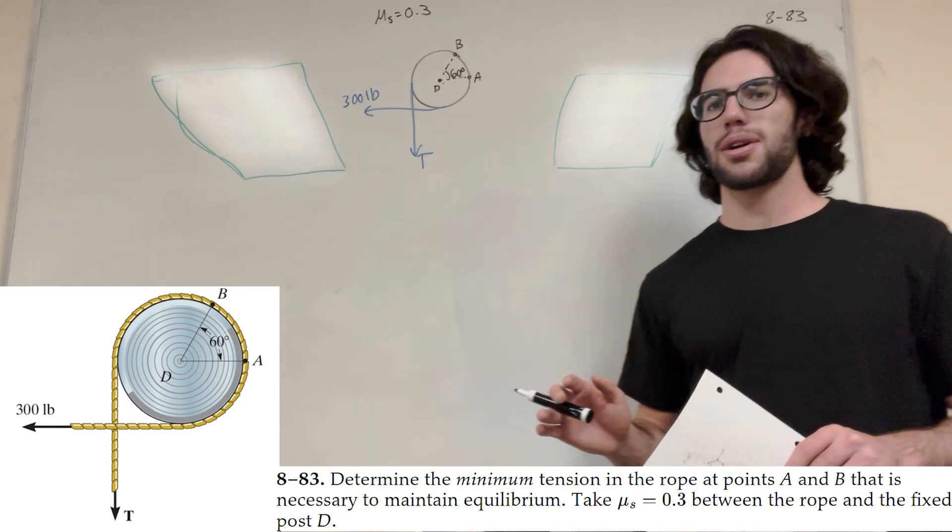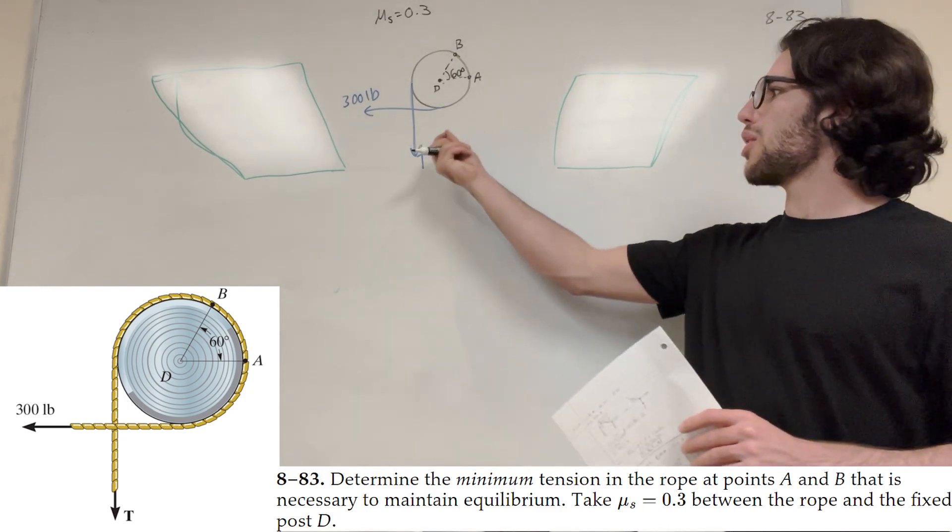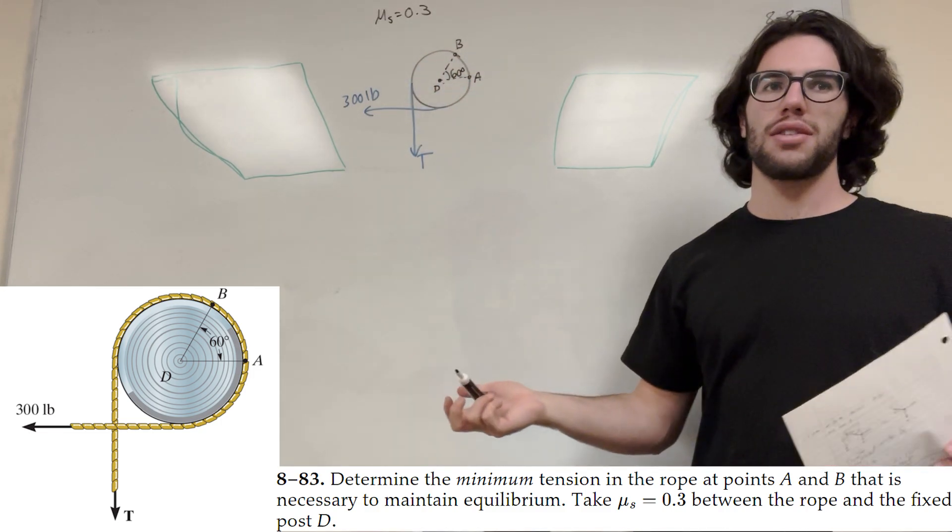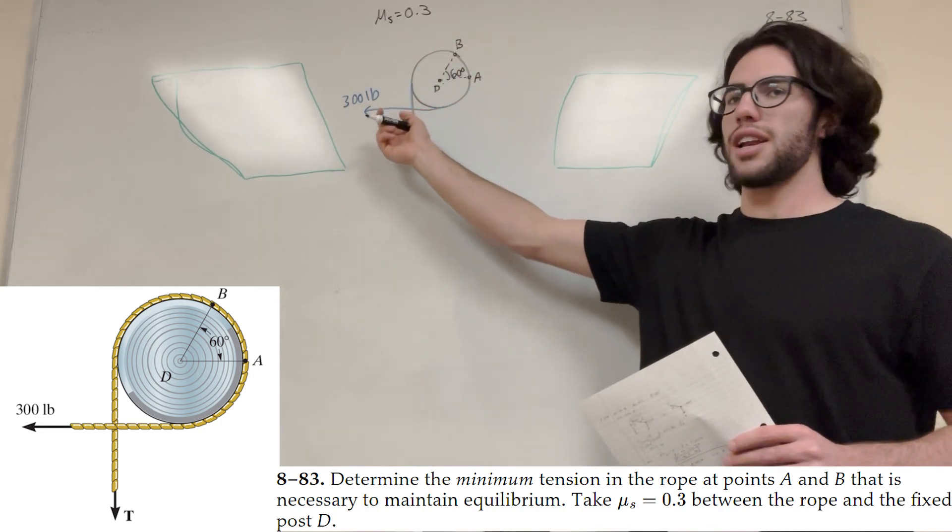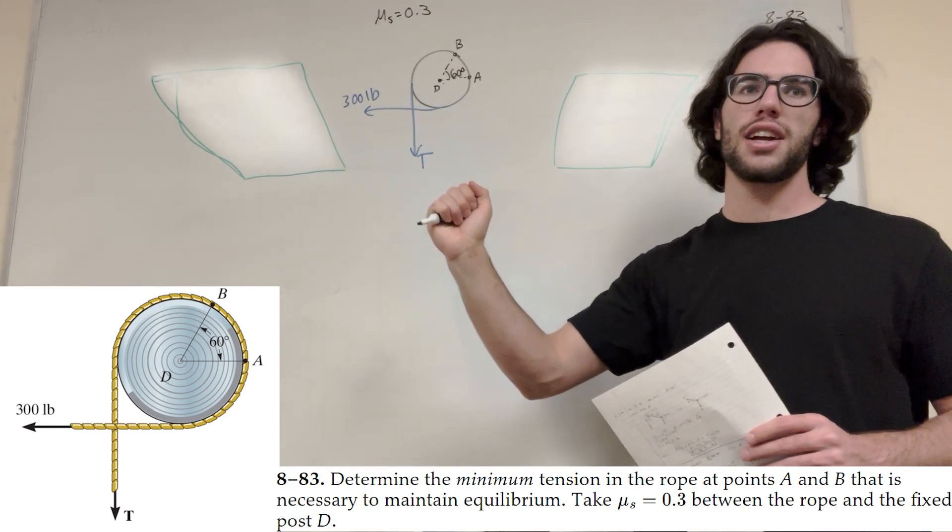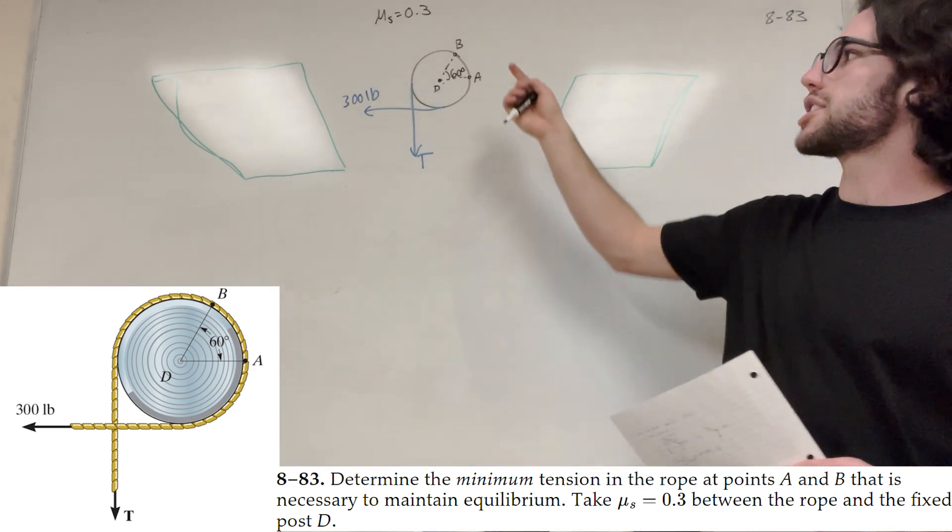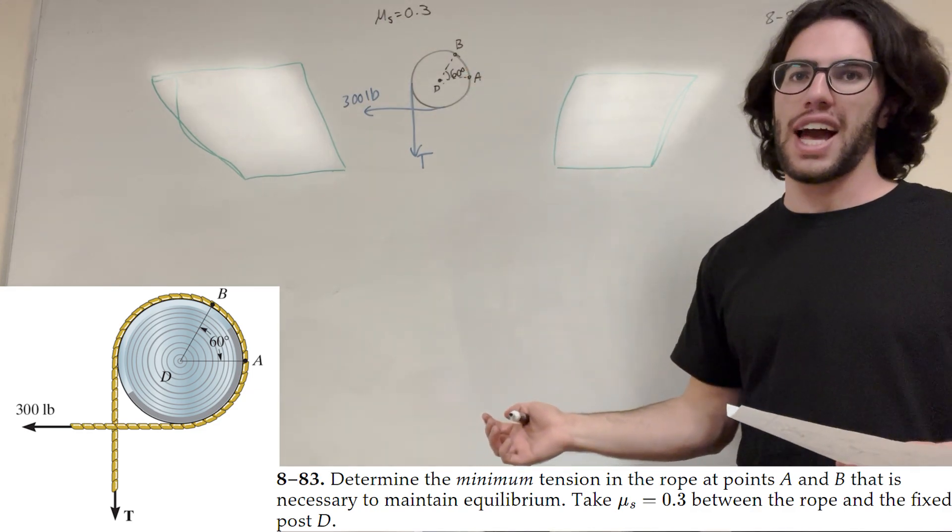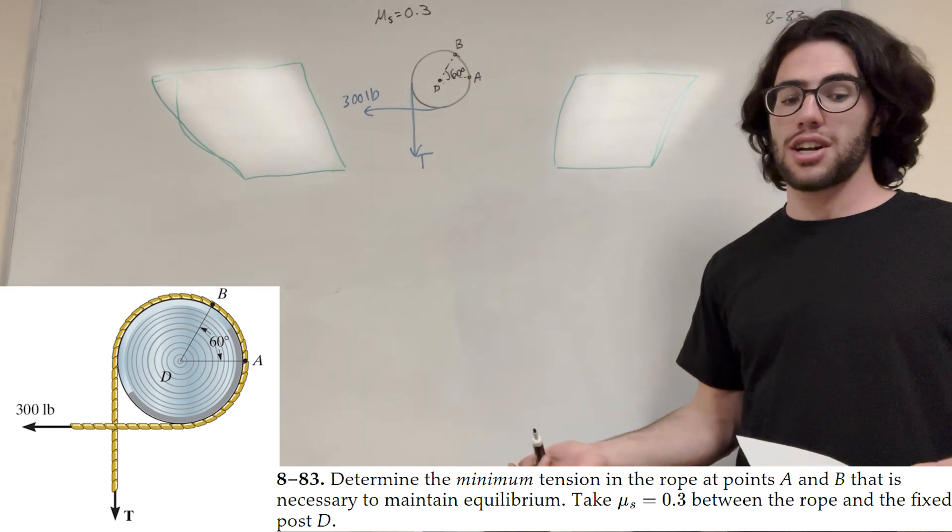What's up Cal gang? Alright, so we got the statics problem here. So we're pulling on a rope here and it's going around this friction system and then it's a 300 pound force on the other side and it wants us to find the minimum tension in the rope at point A and point B in order for the system to be at equilibrium. So let's go ahead and start.